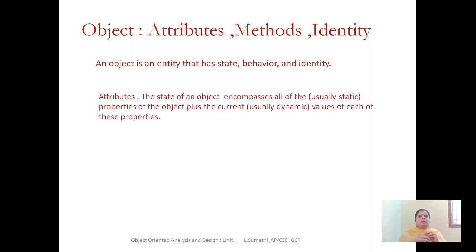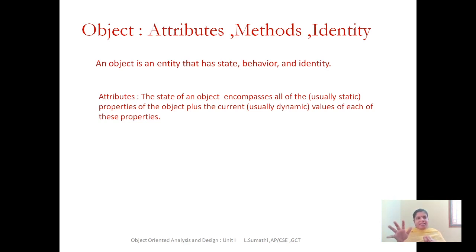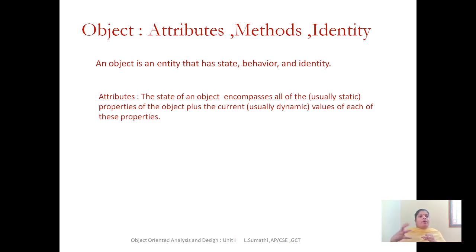For example, think of a student. A student's unique identity is their register number. If a class has 50 students, that means you have 50 objects, each with unique identification — the register number. The state is the name, gender — each student or object will have specific values. The behavior is attending class, attending tests — this function is applicable to all students or all objects in that class.